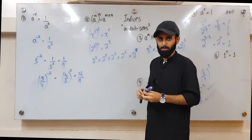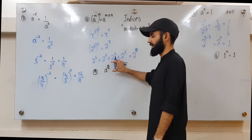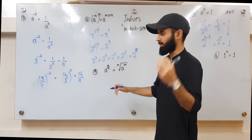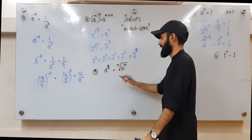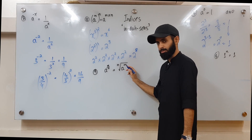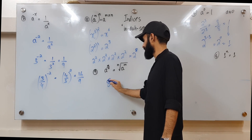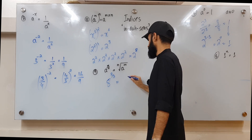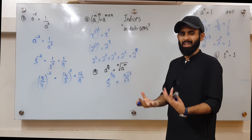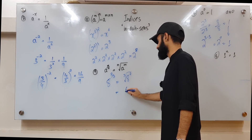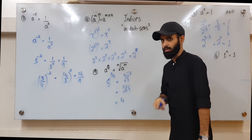Rule number nine: if you have a base raised to a fractional power, the numerator of the fraction is the power you raise the base to, and the denominator is the root you take. For example, 8 raised to the power 2 over 3 means square 8 to get 64, then take the cube root of 64, which equals 4.